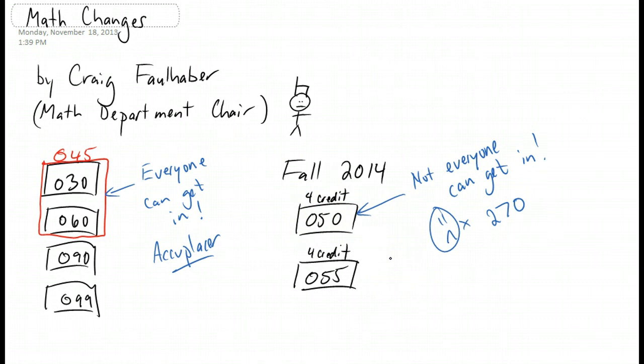So the question that I always get is, what are you going to do with those 270 students? To answer in short, we're going to try to provide as many opportunities for students in this group to improve their Accuplacer score so they can get into math 050. We're going to do the best we can. But this is what I'm concerned about.